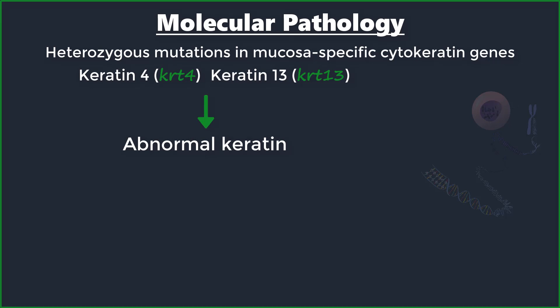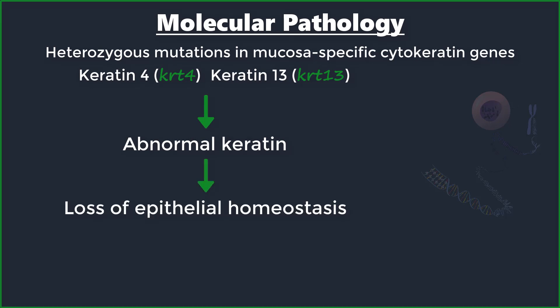These abnormal keratins are unstable, highly fragile, and with a tendency to aggregate intracellularly. Indeed, white sponge nevus is categorized as a keratinocyte fragility syndrome. Normal keratins serve as a crucial cytoskeletal structural support for epithelial cells, playing a pivotal role in maintaining epithelial integrity. They may also be involved in the regulation of epithelial differentiation and certain physiologic and immunologic responses. When they become defective in white sponge nevus, their effect is an unbalanced proliferation and differentiation of keratinocytes and an overall loss of epithelial homeostasis, so that even the mildest forms of mechanical stresses become tricky to withstand.